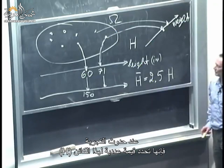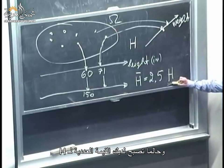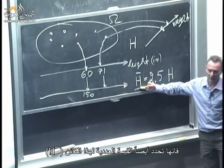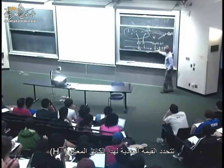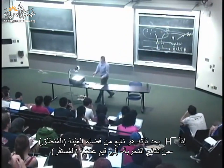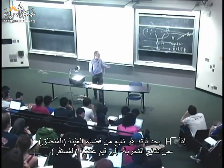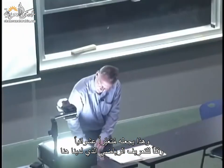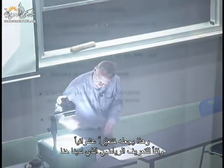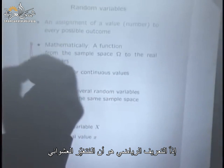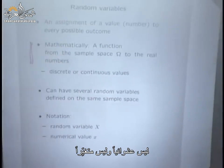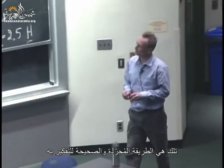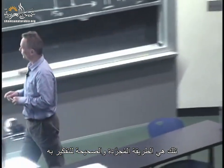What we have here is a random variable defined as a function of another random variable. The point is that functions of random variables are also random variables. The experiment determines a numerical value for this object, and once you have that, it determines also the numerical value for h-bar. So the formal definition is that a random variable is not random and not a variable — it's just a function from the sample space to the real numbers.